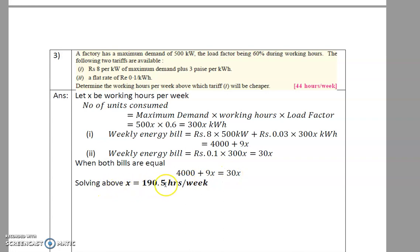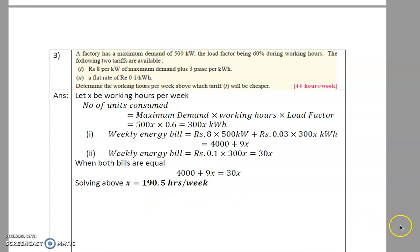Solving: x = 4000 / 21 ≈ 190 hours per week. If the industry works more than 190 hours per week, Tariff 1 is cheaper than Tariff 2. Below this, Tariff 2 is cheaper. Likewise, you can apply this method to similar calculations. Thank you.